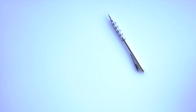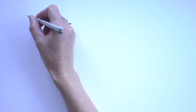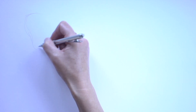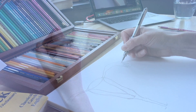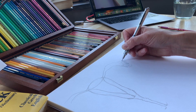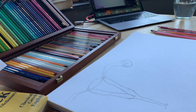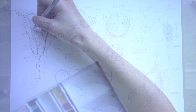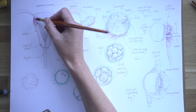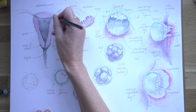This is my very first lockdown embryology video. I'm Professor Alice Roberts and embryology is one of my favourite subjects — how we get from being a single cell to being a complete human being. So we're starting right at the beginning. In these videos I sketch out the anatomy, here the anatomy of the female reproductive system. This first lockdown embryology video takes the egg from fertilisation through to the end of the first week, implanted in the womb, talking through what's happening at each stage.